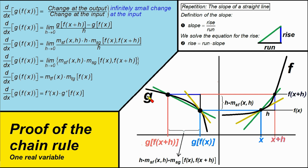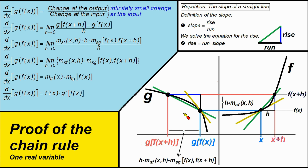We start by drawing both functions, f of x and g, in one coordinate system. I have drawn only the positive part of f and only the positive part of g, omitting the negative parts. The second thing is I have rotated the graph of function g 90 degrees counterclockwise.